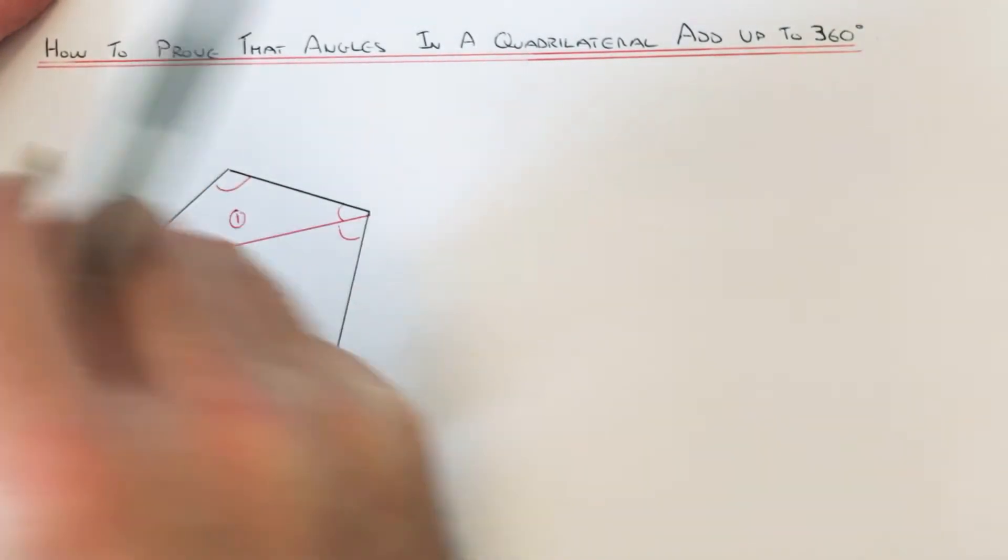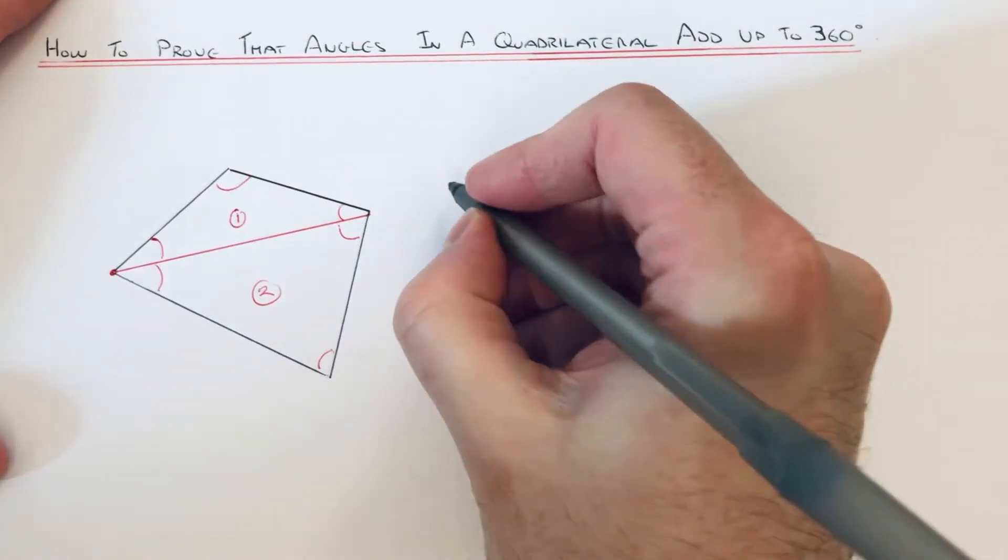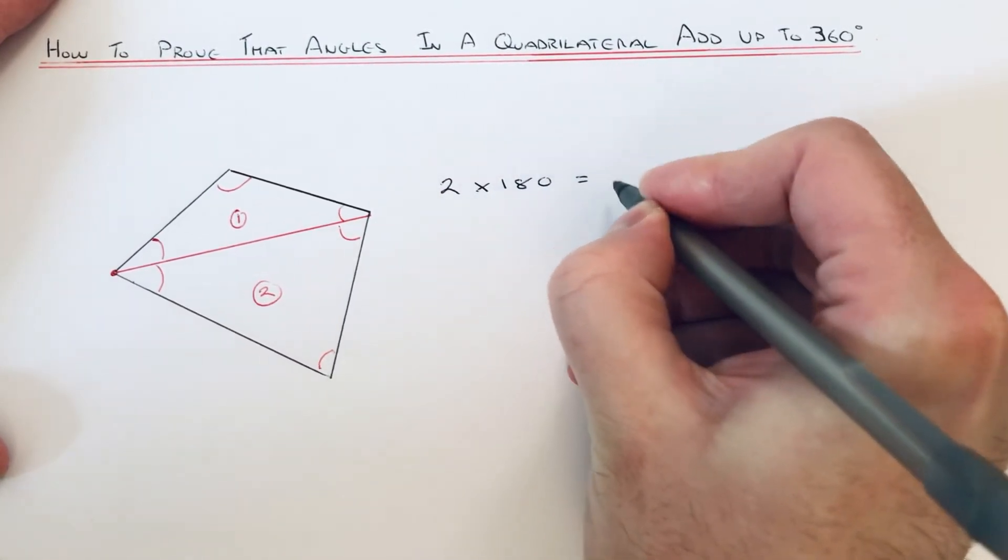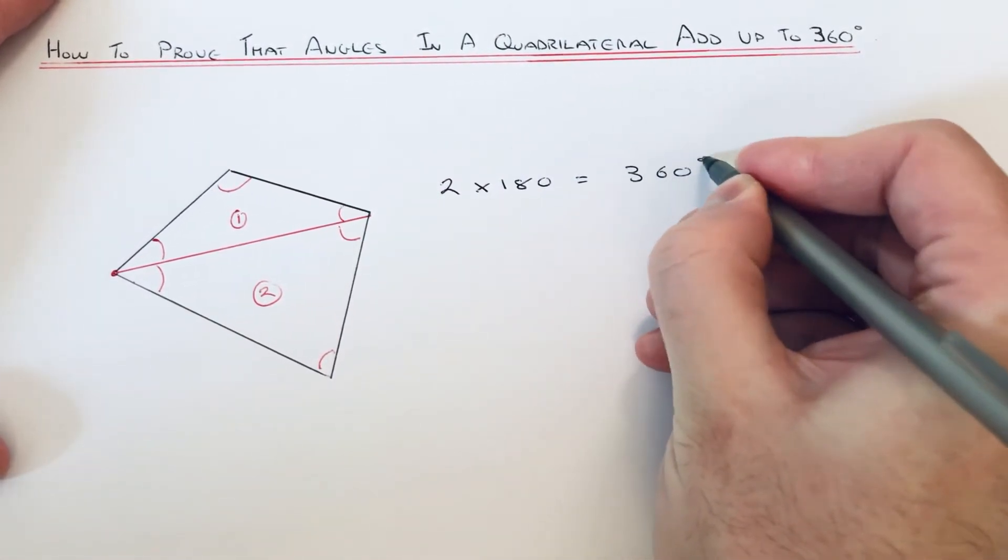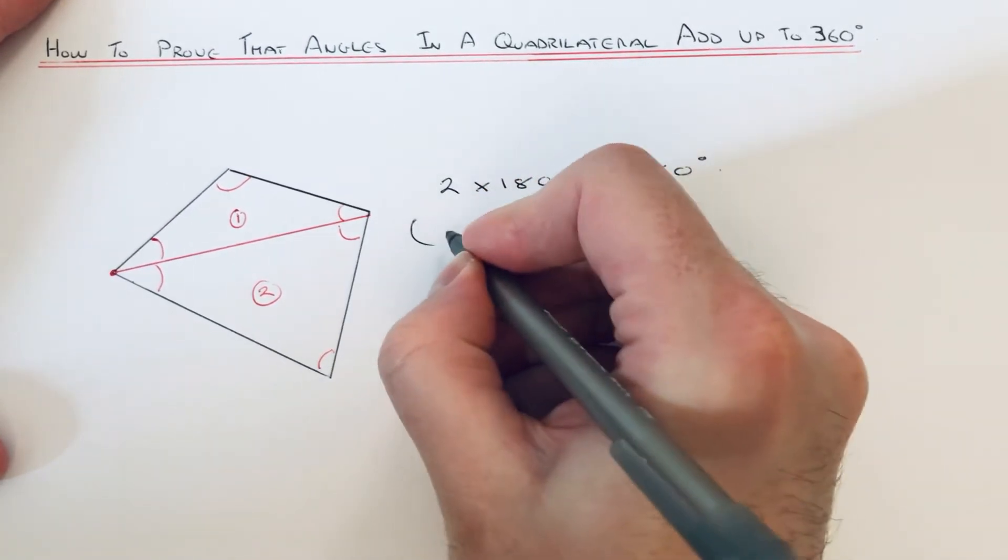If we do 2 times 180, that gives an answer of 360 degrees. Just make a note that we used angles in a triangle add up to 180 degrees.